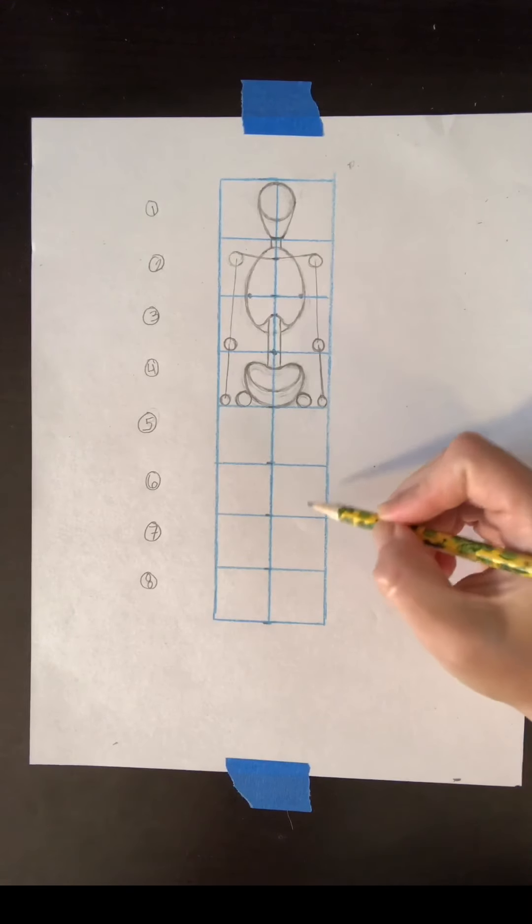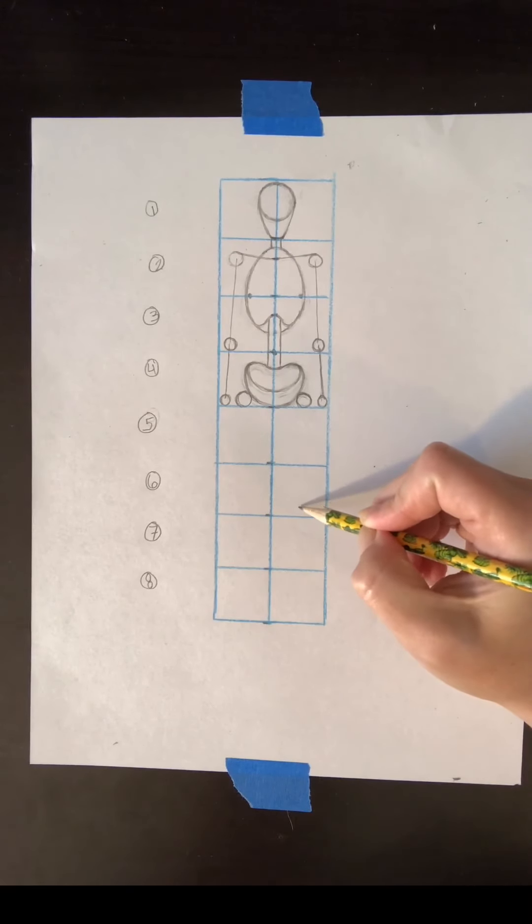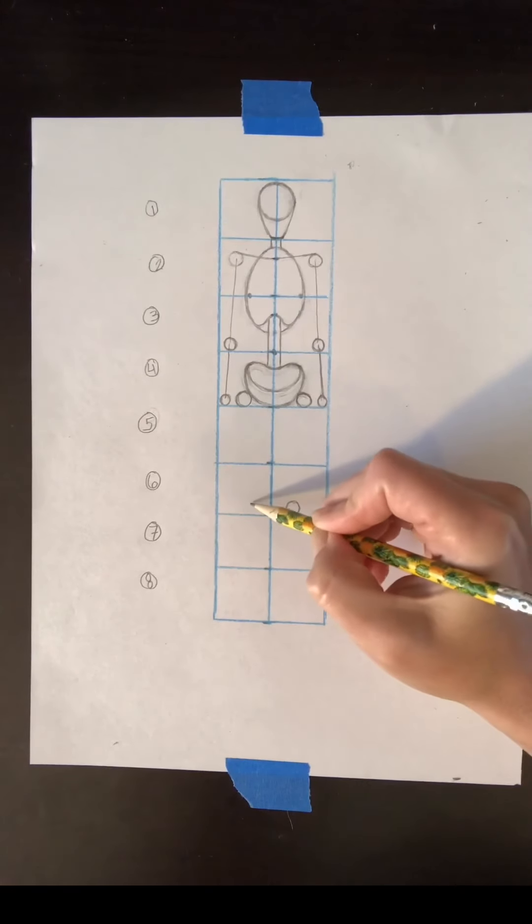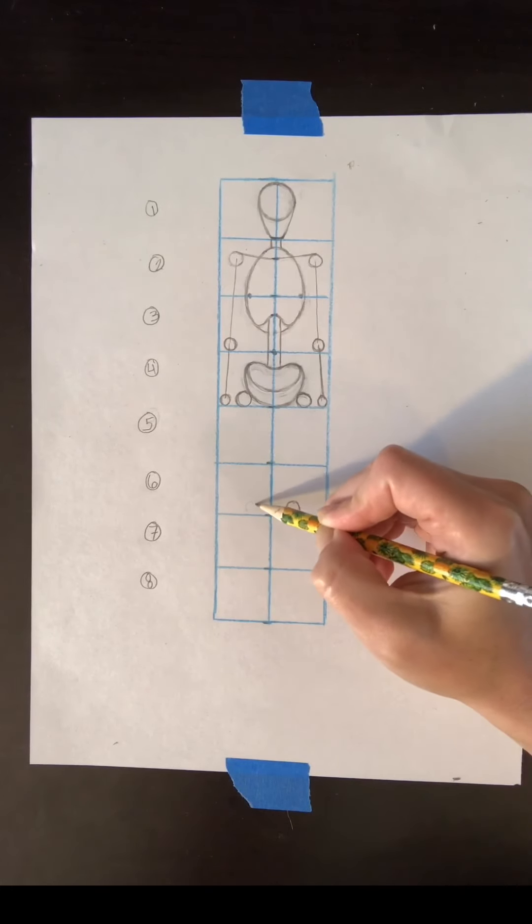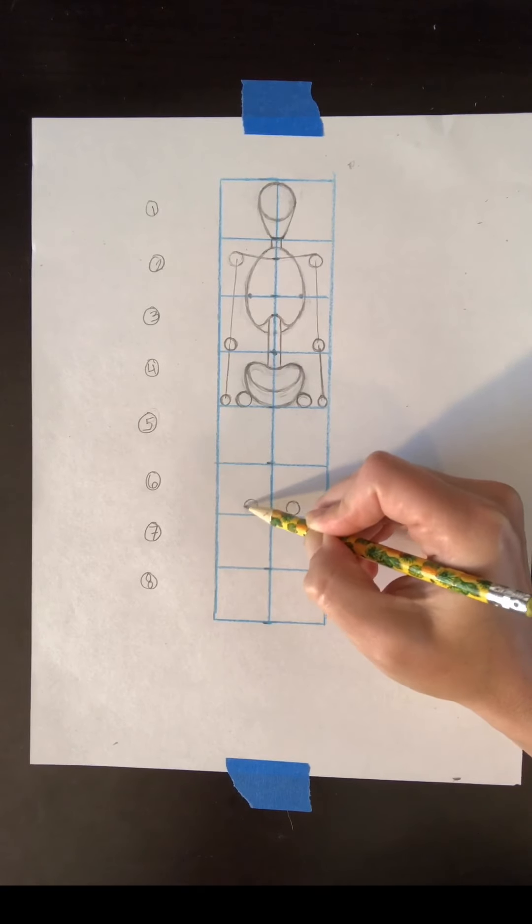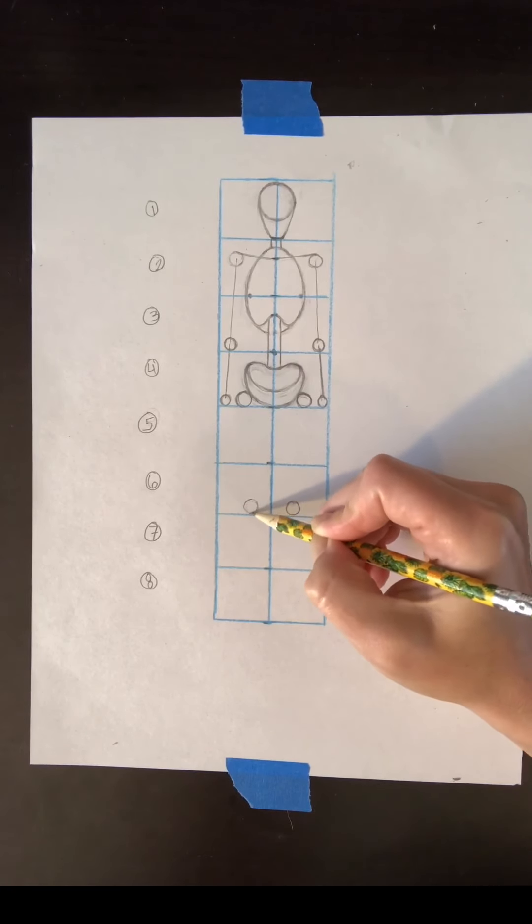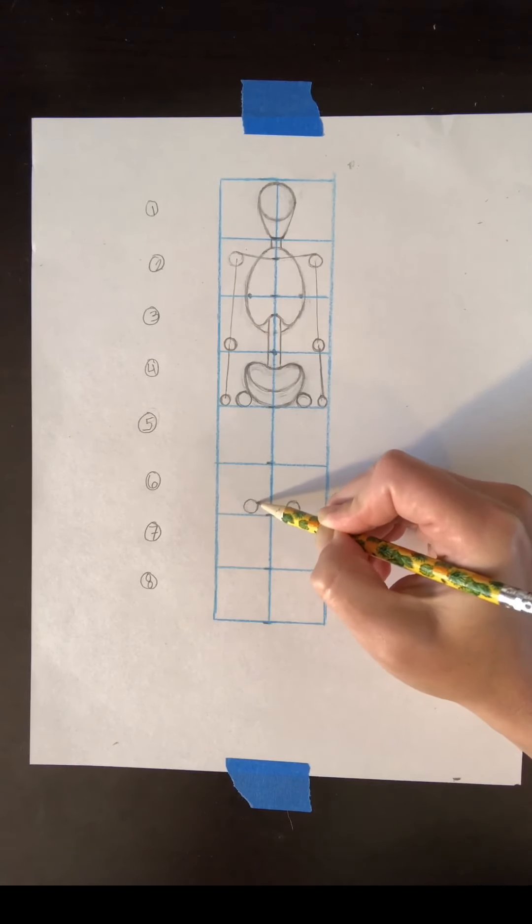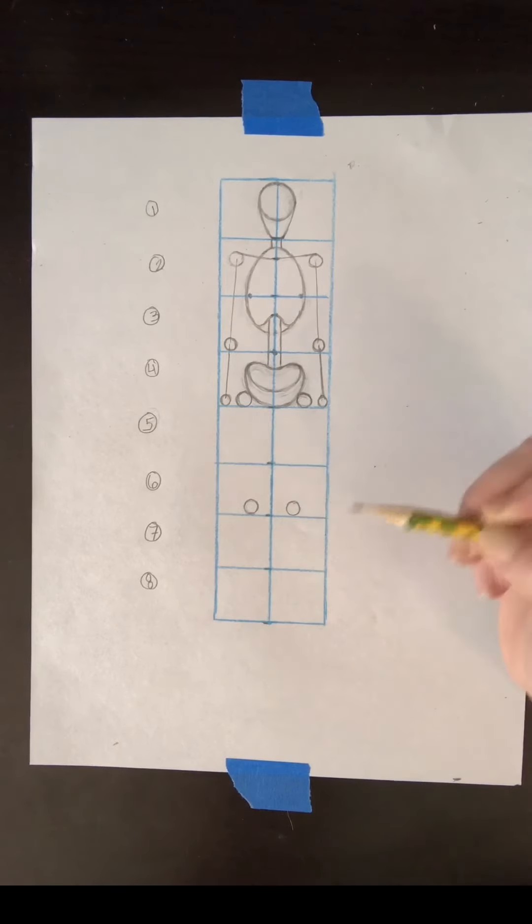So you're going to put two more circles for the knee joints at the base of head six. And let's space these out a little bit so that your person has room to stand. You don't want their feet all scrunched together.